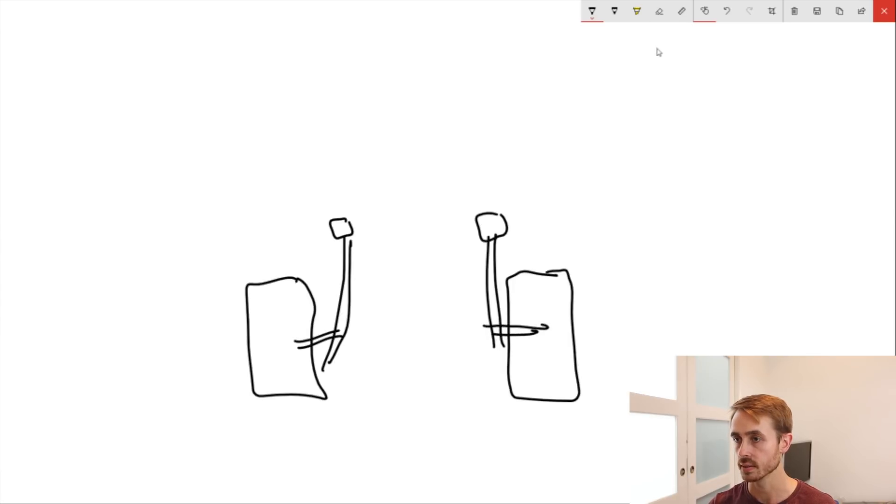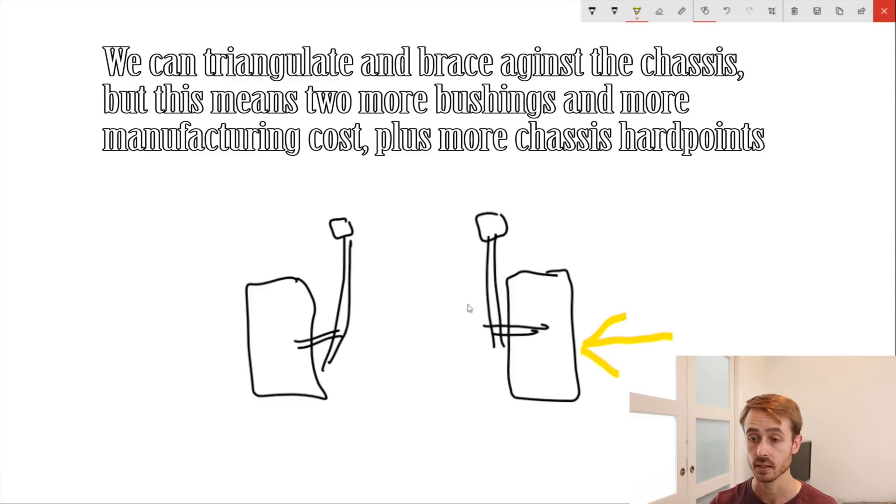The problem is when we have our force in cornering or something like that get applied from the side, you can see that this is not going to be very strong in any sort of deflection. Combined with that, you can see with this setup we have no sort of roll stiffness. So we need some sort of anti-roll bar.